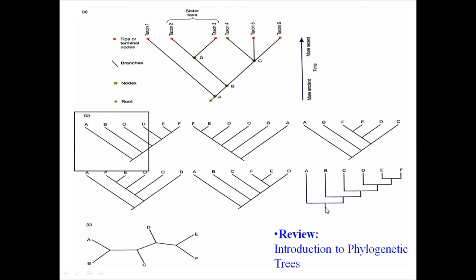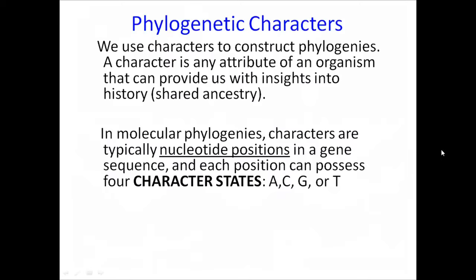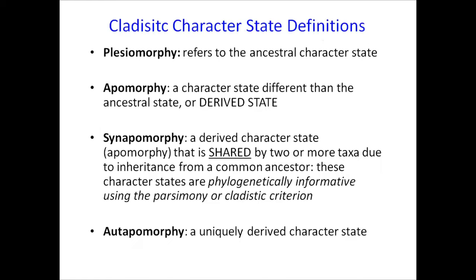Phylogenetic characters are attributes of an organism that can provide insights into evolutionary history by sharing common ancestors. In molecular phylogenies, the characters are typically nucleotide positions in a gene sequence. Each position can be one of four characters: A, C, G, or T. These four characters form the basis of molecular phylogenetic tree analysis.